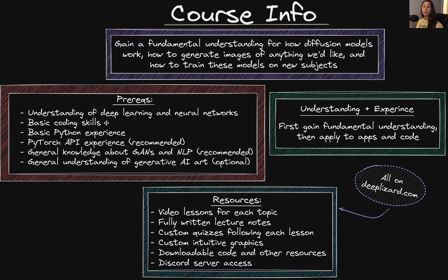Later in the course, we'll be jumping into code implemented using the Hugging Face Diffusers API as well as PyTorch, and we'll be going step by step through the code once we get there. In terms of coding prerequisites, some basic coding skills and familiarity with Python are required. If you are not familiar with a neural network library like PyTorch, it is recommended — though not strictly required — that you have some experience with it. We do have a full PyTorch course available if you are not yet familiar with this library.